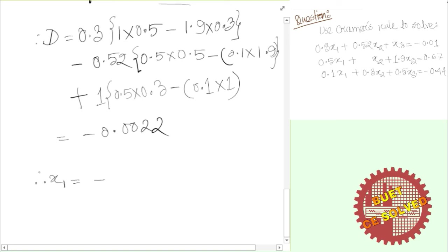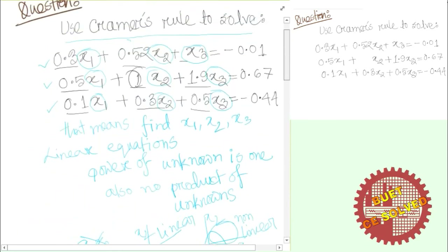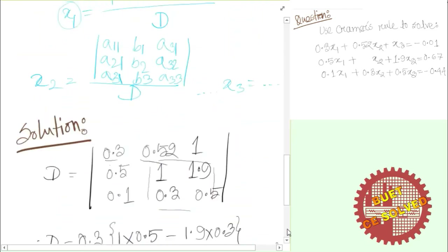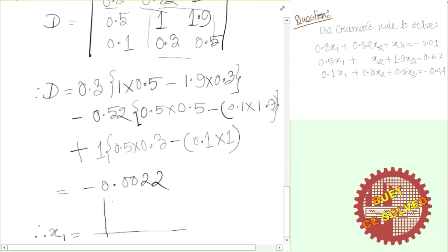For x2, I use the same method. The constant values on the right-hand side — b1, b2, b3 — are placed in the first column for x1, replacing the first unknown's column in the matrix. The modified matrix has values from the example: first column b2, then the remaining columns. Values shown are 1.2, 1.3, then 1.9, then 1.5.